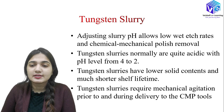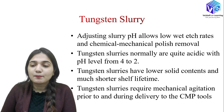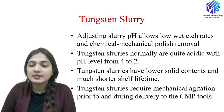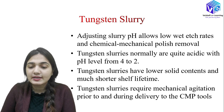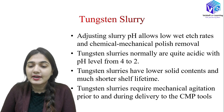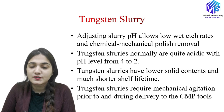Coming to tungsten slurry: we adjust the pH to allow a low wet etching rate and chemical mechanical polish removal. Tungsten slurries are normally quite acidic with pH levels from 2 to 4. They have lower solid content and much shorter shelf lifetime, so they must be used as soon as possible.